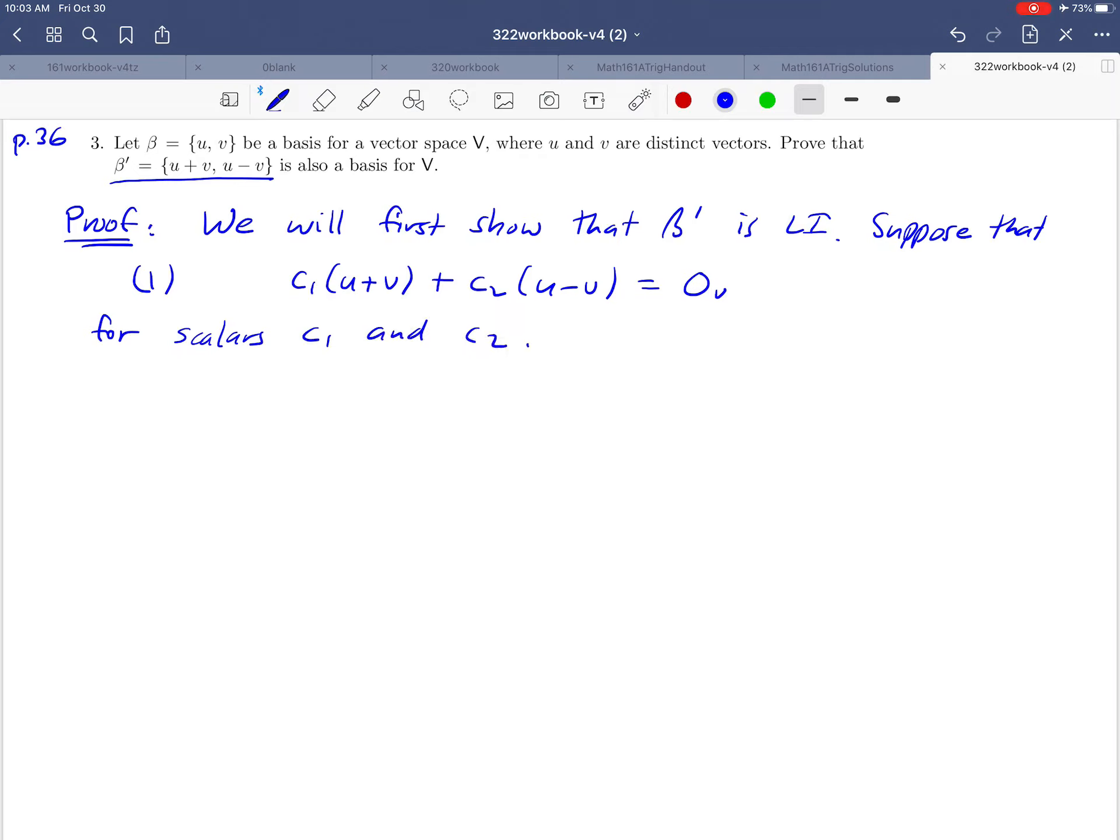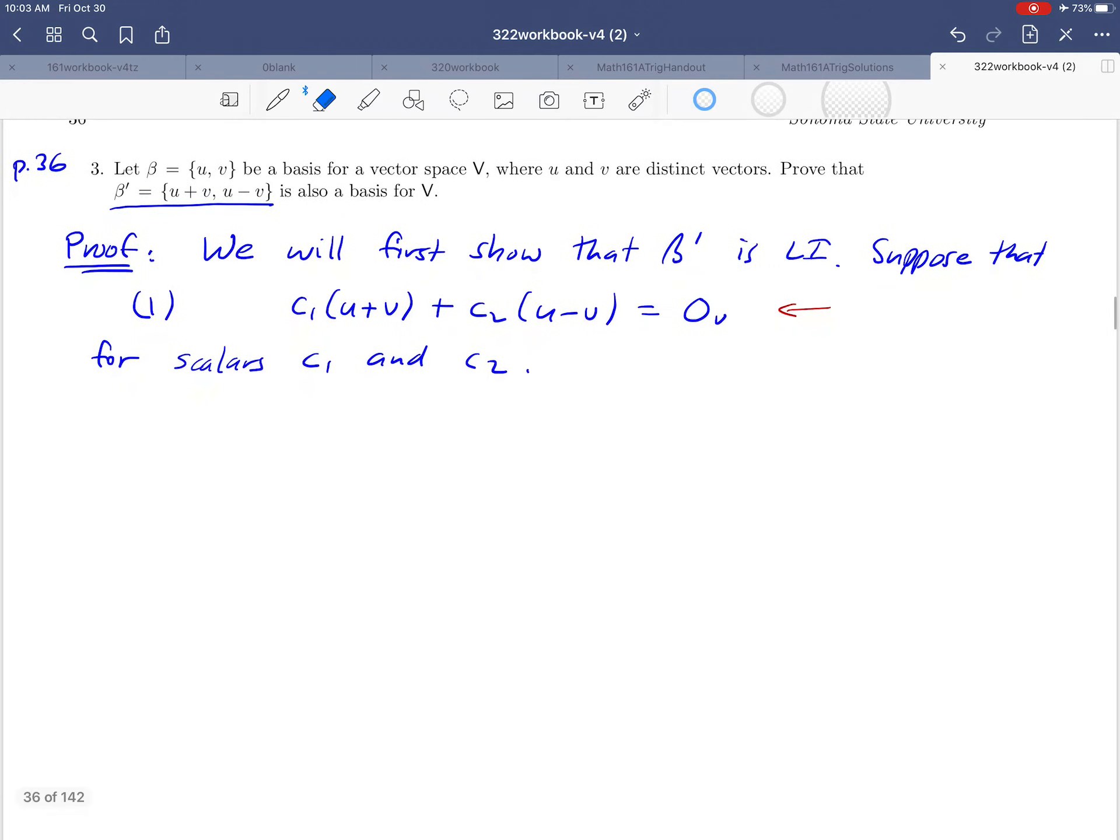Now why would we start with that assumption? Remember how we define linear independence—it had to do with forming this linear combination, setting it equal to zero, and asking whether we have non-trivial solutions. We would like to show that c₁ and c₂ have to be zero, that this equation has only the trivial solution.